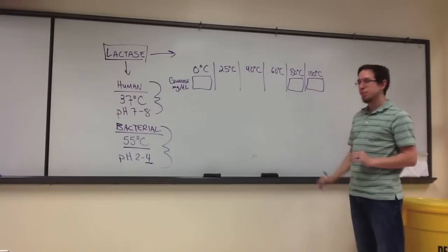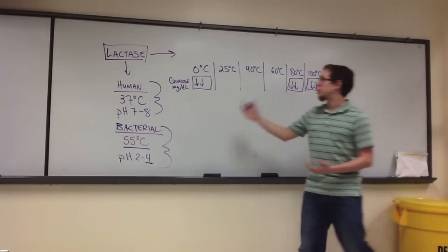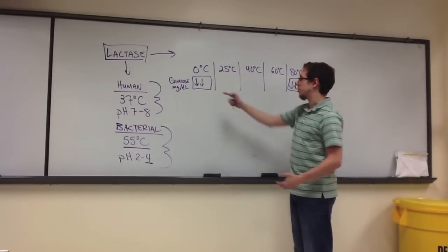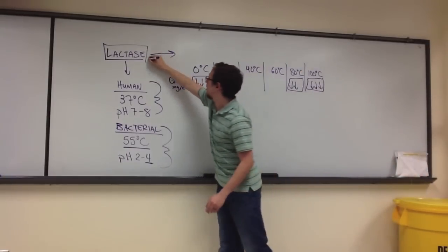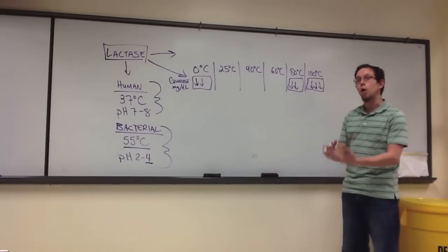What I do want to talk about is what we expect to happen potentially here, maybe a little here, and maybe here at 0 degrees. We'll talk about the optimal, and I'll show you how to read a graph based off of this data here in just a second. So let's say we see a decrease in glucose production, and that means a decrease in lactase activity at each of those three temperatures. What does this mean?